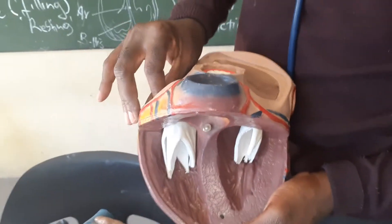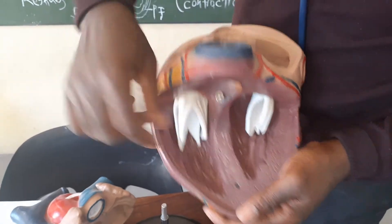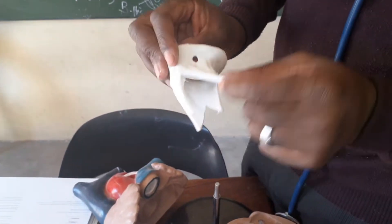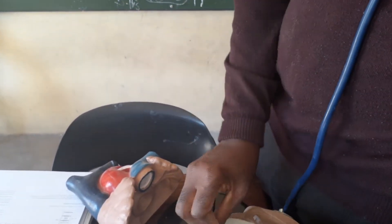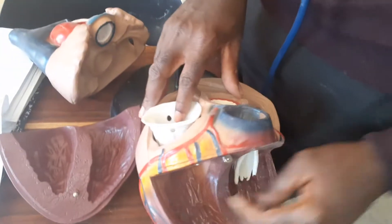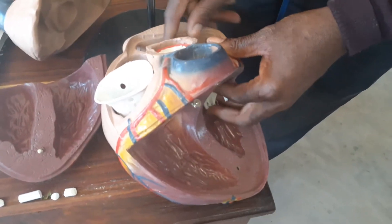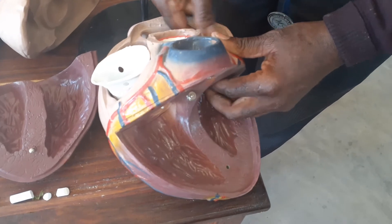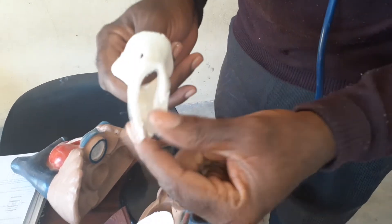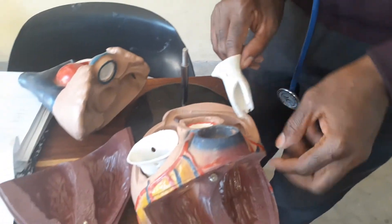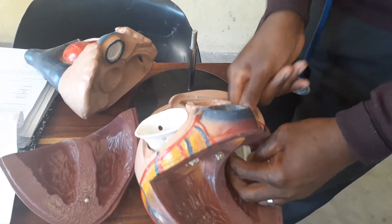Now the one on your right hand side is the Tricuspid valve. It is called Tricuspid because it has three cusps — one, two, three. That is on the right hand side. The one on your left hand side is called the Bicuspid valve because it has two valves or two cusps. 'Bi' means two, 'Tri' means three.